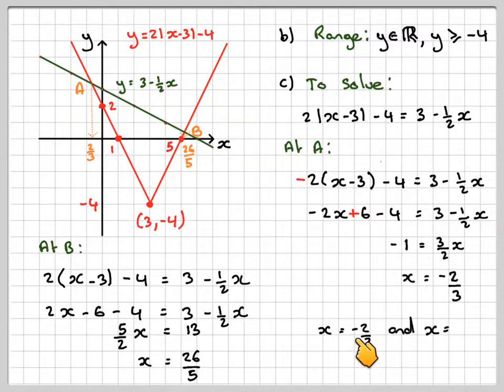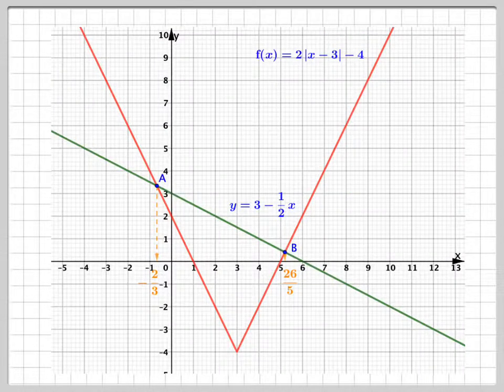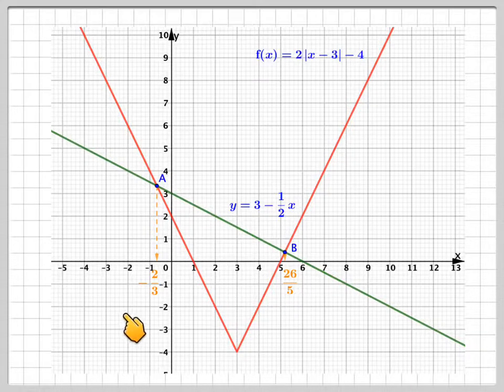And therefore, we get two solutions. x is minus 2 over 3, and x is 26 over 5. And then if we want to look at this using something like GeoGebra, this is what it would look like using GeoGebra, giving our two solutions here. So this has been a video to show you how to sketch a modulus function graph without any technology, and then use it to solve an equation. I hope you've understood, and I thank you very much for watching.